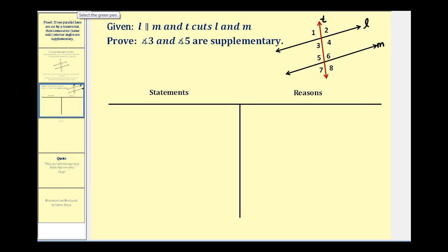Let's outline a strategy before we start. We know from the corresponding angle postulate that angle one and angle five are congruent. We also know that angle three and angle one form a linear pair, which means they are supplementary and the sum of their measures would be 180 degrees.